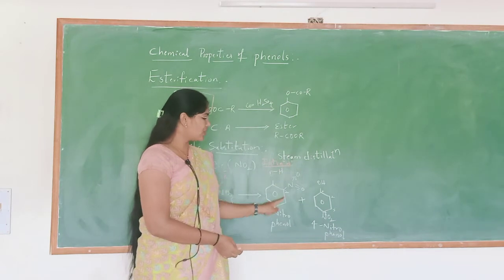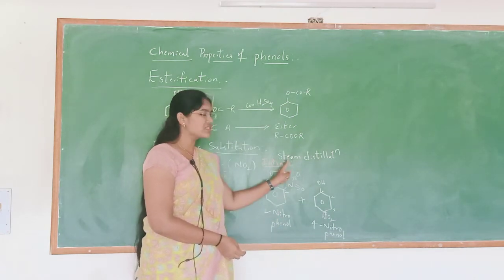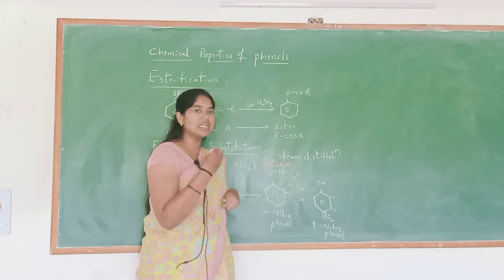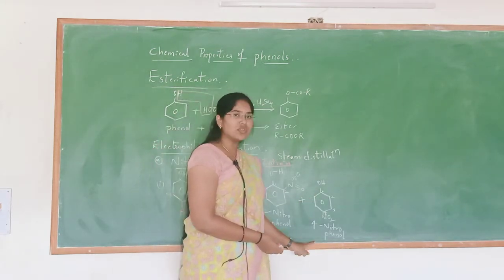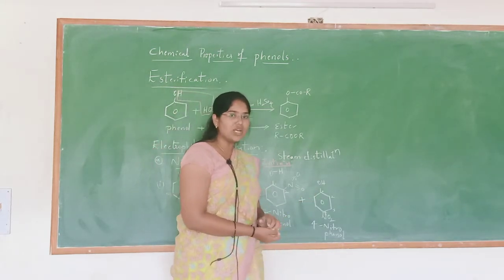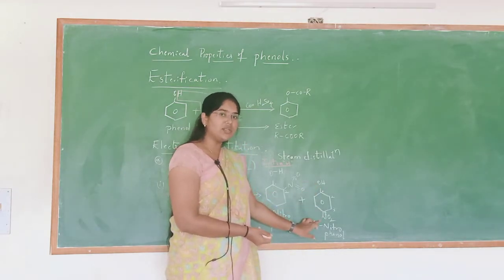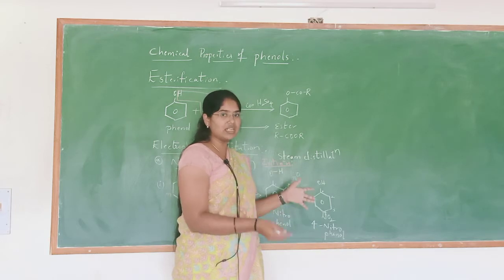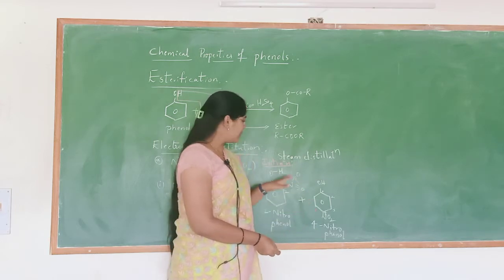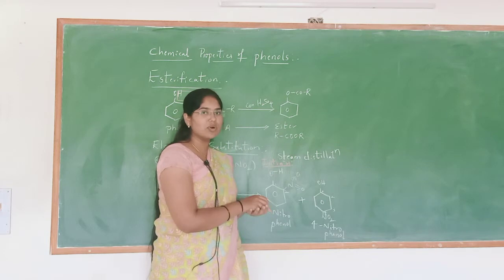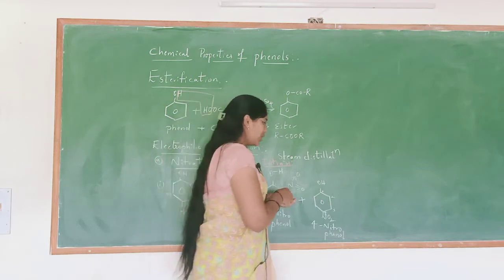Due to containing intramolecular hydrogen bonding, 2-nitrophenol is steam volatile type, meaning it gets evaporated on heating. Now see 4-nitrophenol. In this 4-nitrophenol, the two bulky groups are present far apart from each other, meaning there is no connection between these two. So it will not participate in intramolecular hydrogen bonding but it can participate in intermolecular hydrogen bonding.